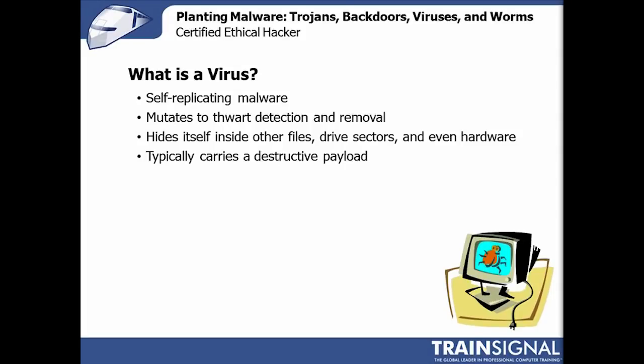When a user reads about malware, they usually read about a virus. The media typically reports general malware as a virus because 'virus' sounds nasty — and some of it is pretty nasty. The industry calls self-replicating malware a virus, and viruses have a couple of key characteristics: they mutate, changing their form, pattern, code, and footprint to try to prevent detection and removal. Even with great virus scanners, if the virus is constantly changing and adapting, it becomes a cat and mouse game.